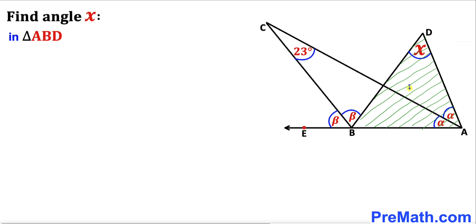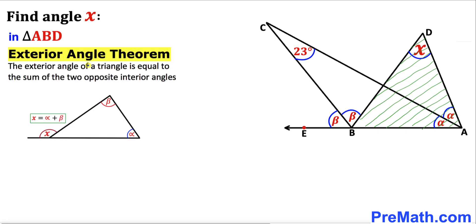Here's our first step. Let's focus on triangle ABD. Now let's recall the Exterior Angle Theorem. The exterior angle of a triangle is equal to the sum of two opposite interior angles, as you can see in this diagram. In our case, the opposite interior angle is alpha plus alpha, which is 2 alpha.